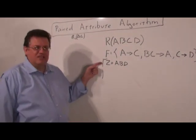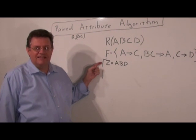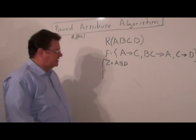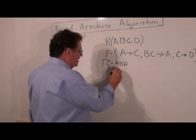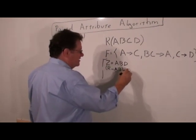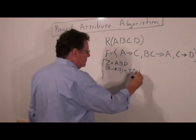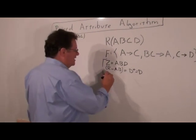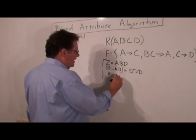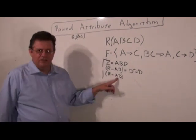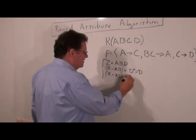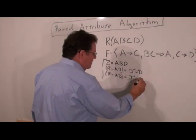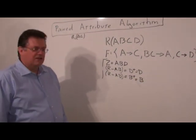So at this point, our Z has been reduced from ABCD to ABD. Now we know from the previous iteration that R minus AB is D closure, which is D. If we did R minus AD closure, the result is B closure. And B closure is just B.